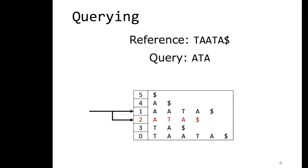A student asks whether aligner choice is influenced by working with eukaryotes versus prokaryotes. The choice between Bowtie2 and BWA would be similar for any organism: if you expect many mismatches use a local aligner; if you expect mostly complete matches — often the case with prokaryotic genomes — a global aligner works well.